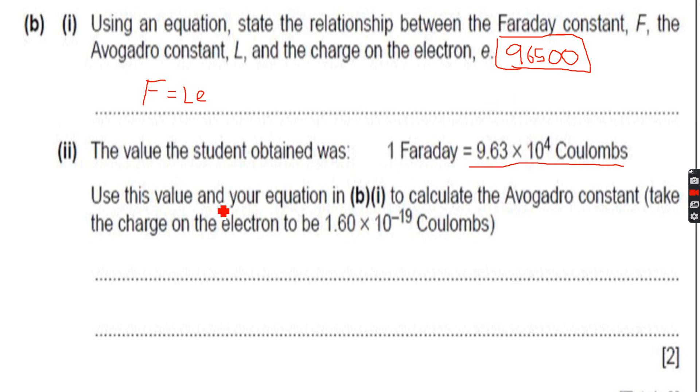Use this value and your equation in b(i) to calculate the Avogadro constant. Take the charge on the electron to be 1.6 times 10 to the power of minus 19 coulombs. This is the charge on the electron. Now what we have to calculate is the Avogadro constant, which means we have to calculate L. For that we have to make L the subject,